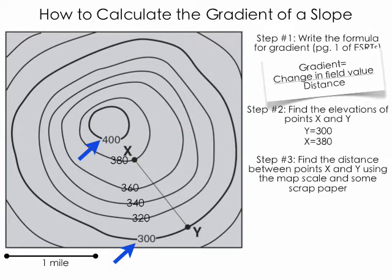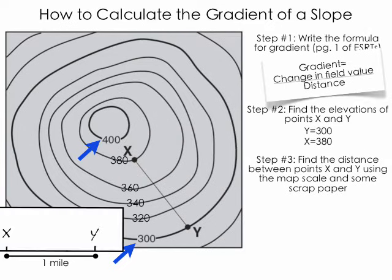And you take your scrap paper, and you move it down along the map scale on the bottom left corner. In this case, it looks like X and Y are exactly one mile away from each other.